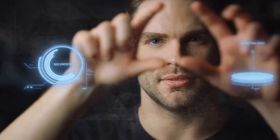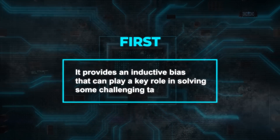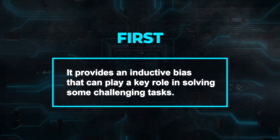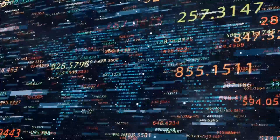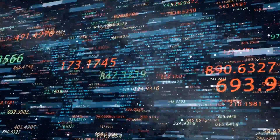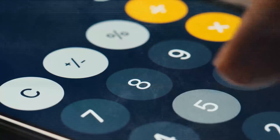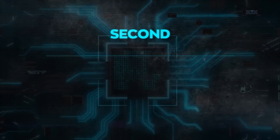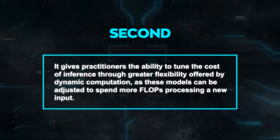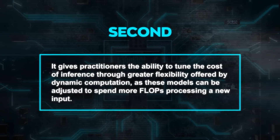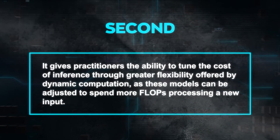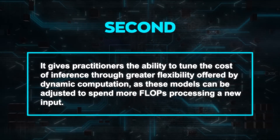Adaptive computation in neural networks is appealing for two key reasons. First, it provides an inductive bias that can play a key role in solving some challenging tasks. For instance, enabling different numbers of computational steps for different inputs can be crucial in solving arithmetic problems that require modeling hierarchies of different depths. Second, it gives practitioners the ability to tune the cost of inference through greater flexibility offered by dynamic computation, as these models can be adjusted to spend more flops processing a new input.